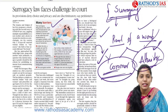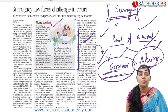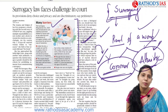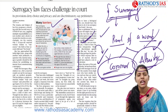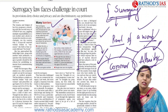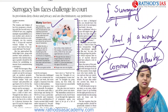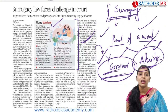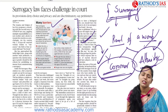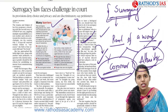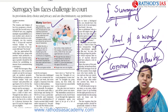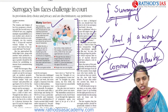The Surrogacy Regulation Act of 2021 was introduced to curb illegal and unethical practices related to exploitation of surrogate mothers. There are documented cases of exploitation — for example, if a surrogate mother gives birth to a girl child, some intended parents leave the girl child behind; if twins are born, they take only one baby. Because of such issues, the government came up with this act.